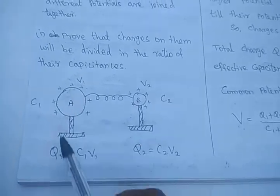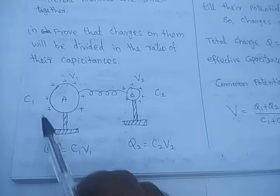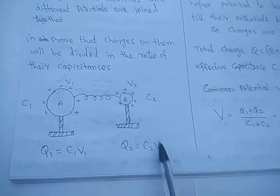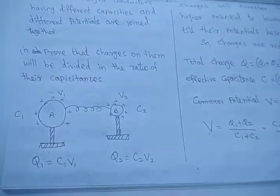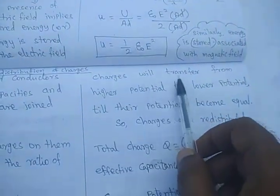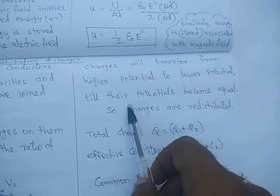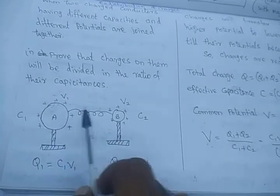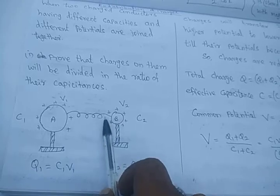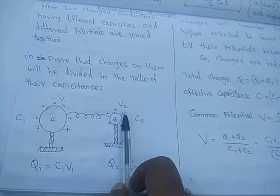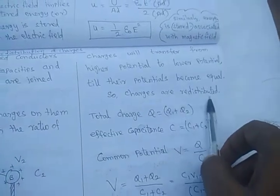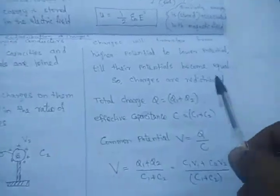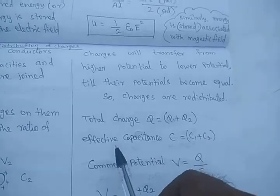For the first conductor A, the charge is q1, capacitance is C1, and potential is V1. So q1 = C1V1 and q2 = C2V2 for conductor B. When connected together, assuming V1 is higher and V2 is lower potential, charges move from higher to lower potential. The charges will be redistributed until both conductors have the same equal potential. This is called charge redistribution.